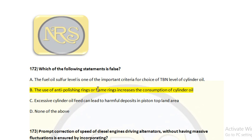Anti-polishing rings are mostly found in two-stroke engines and flame rings in four-stroke engines; they are present on the liner in the top part, removing deposits accumulated on the side of the piston crown so they fall inside the combustion chamber and get combusted. This helps reduce the consumption of cylinder oil. If these deposits remain in the top part there will be abrasive wear, and to overcome this we fit the anti-polishing ring. So the statement that it increases cylinder oil consumption is wrong — option B is the correct answer.